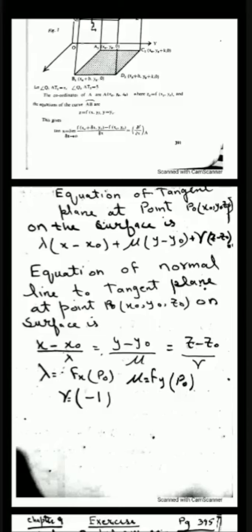Lambda means the first partial derivative with respect to x. When we find the first derivative with respect to x and put the given point into it, the resulting value is called lambda. Mu means when we find the first derivative with respect to y and substitute the point.